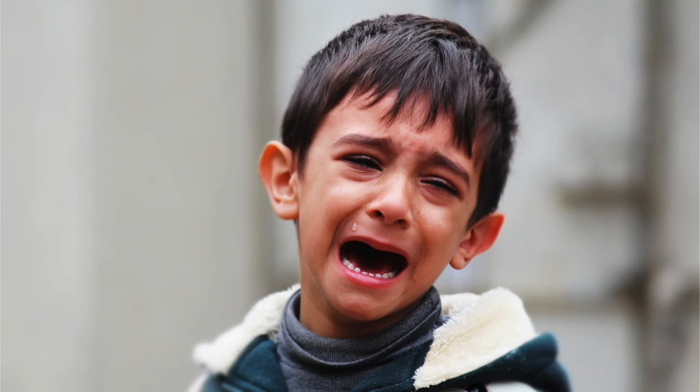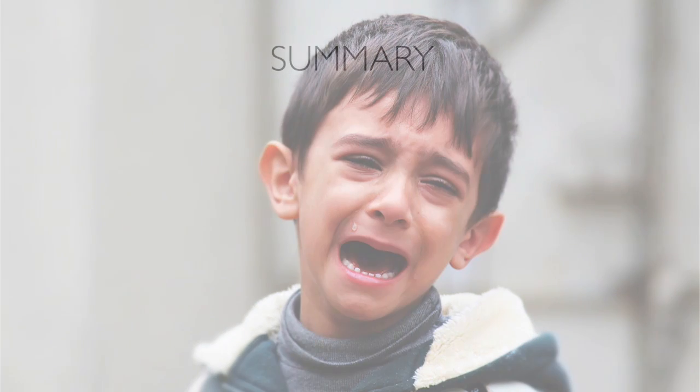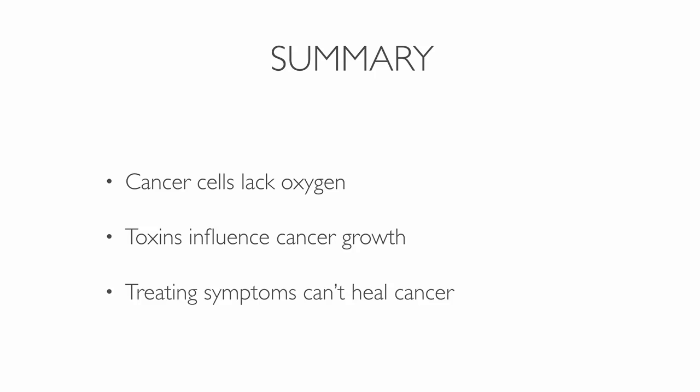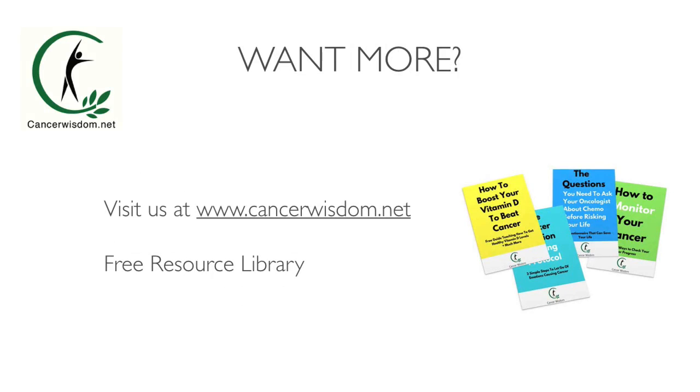Today you learned that cancer manifests when cells lack oxygen, and toxins influence cancer cells to use glucose instead of oxygen. Your diet, sleeping patterns, and stress can make your body more toxic — as can lack of sunshine, heavy metals, and dehydration. Conventional cancer treatments can't fix cancer because they don't address the root cause. To heal cancer, it's important to first understand it, then treat the root causes and not just the symptoms. If you want to learn more, please visit our homepage at cancerwisdom.net.